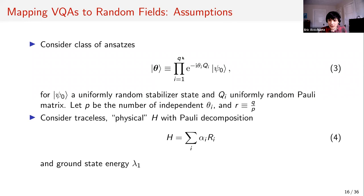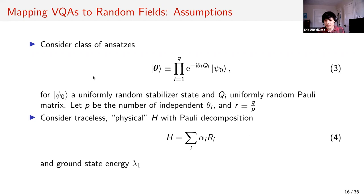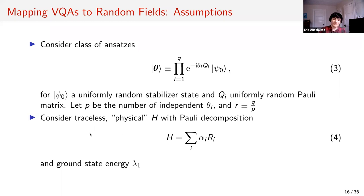We consider a class of ansatzis where we start in an arbitrary stabilizer state and rotate under random Pauli matrices. Obviously this isn't what we do in practice, but it's a mathematically convenient way to completely decouple the ansatz from the problem Hamiltonian — essentially looking at ansatzis with no relation at all to the problem. Q is the number of Pauli evolutions; P is the number of independent parameters, which turns out to be the more important quantity.